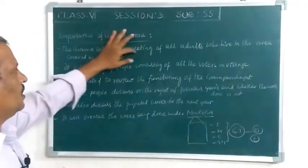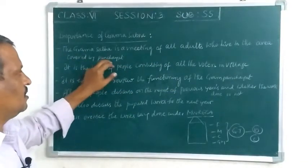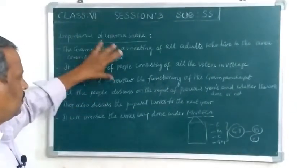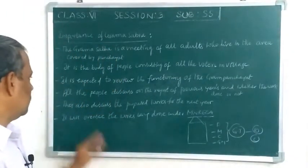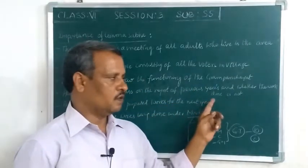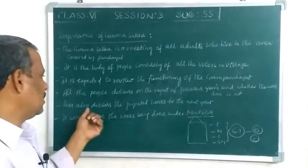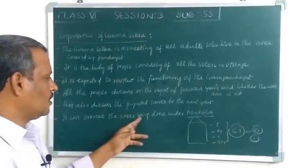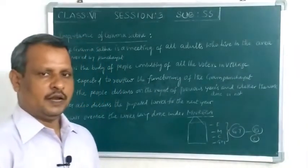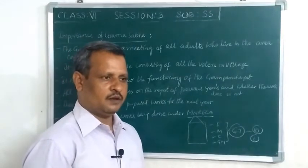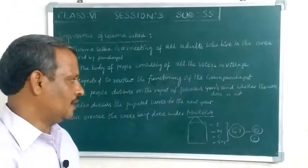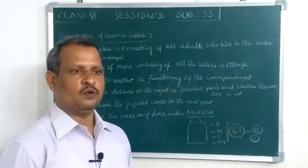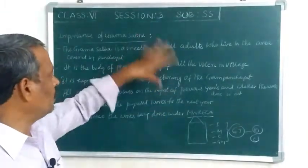The Gram Sabha is the meeting of all adults who live in the area covered by the panchayat. It is the body of people consisting of all voters in the village. The Gram Sabha reviews the functioning of the Gram Panchayat — what works were done in the previous year, whether satisfactory or not, and discusses proposed works for next year. It also oversees works under MGNREGA, where the government provides job cards for rural laborers and pays 210 rupees per day through field officers.